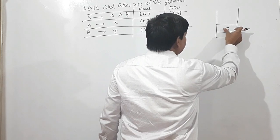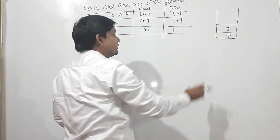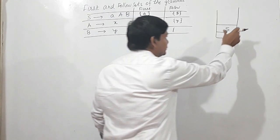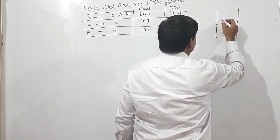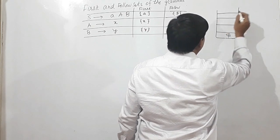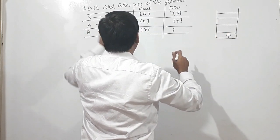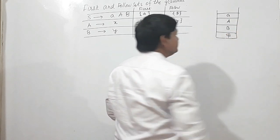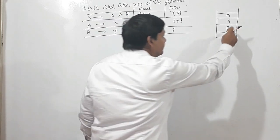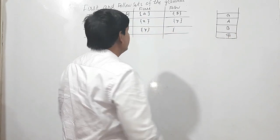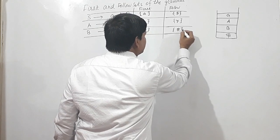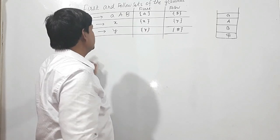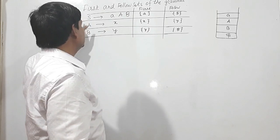For Follow of B: if we replace S using S→AAB, we pop S from the stack and push A, A, B. So B is the rightmost non-terminal produced by S, and Follow of B is the same as Follow of S, which is dollar. So Follow of B is {$}. This is the complete First and Follow sets for this grammar.